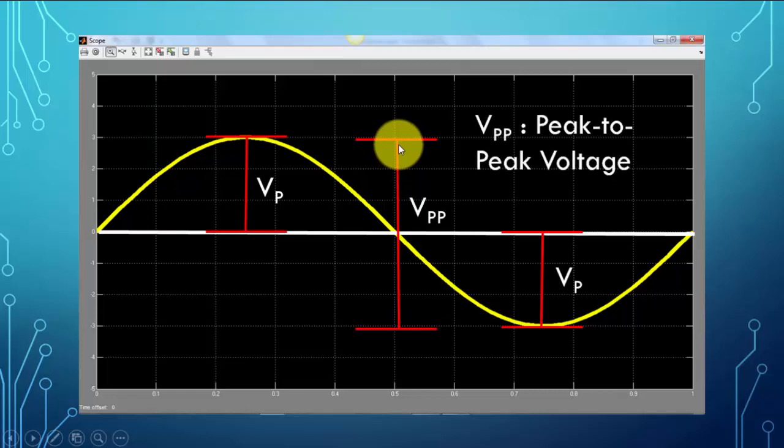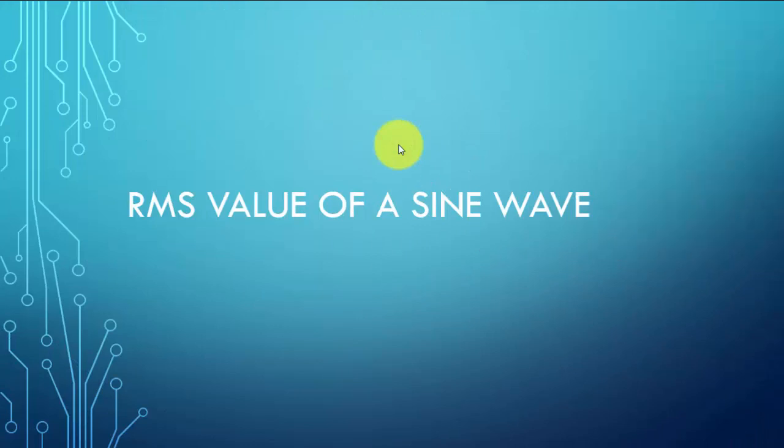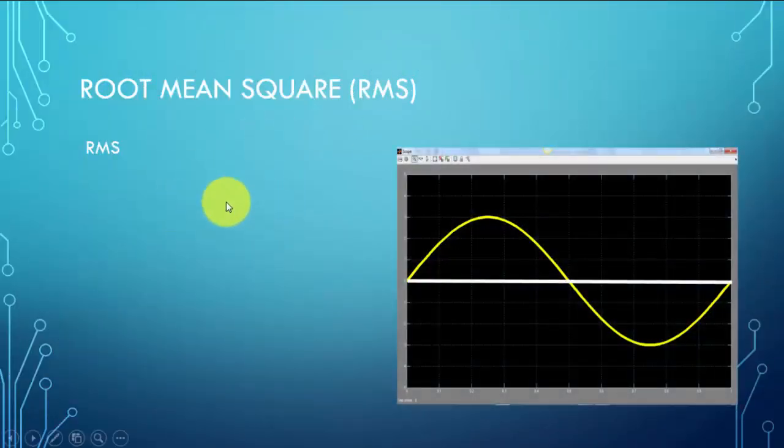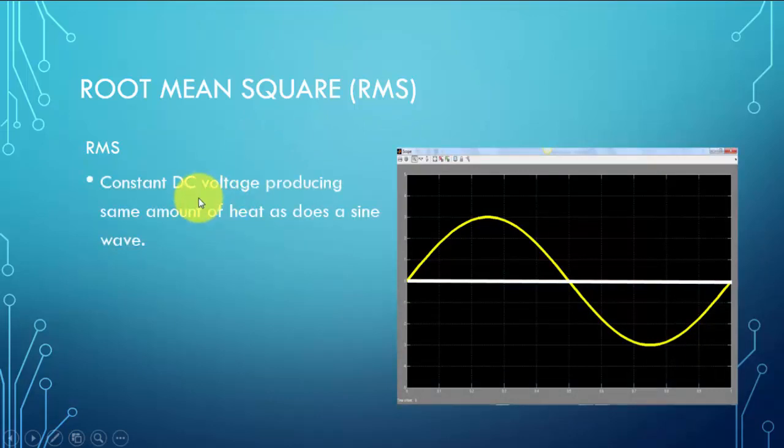Another important vertical or amplitude characteristic of a sine wave is the root mean square. We define the root mean square as a constant DC voltage producing the same amount of heat as a sine wave. And the VRMS is defined as 0.707 times the peak voltage. It's also known as the effective voltage.